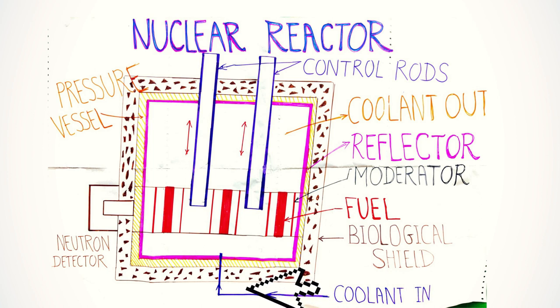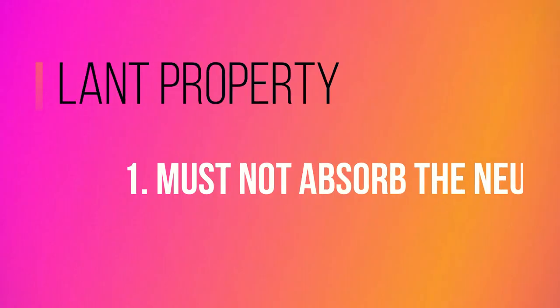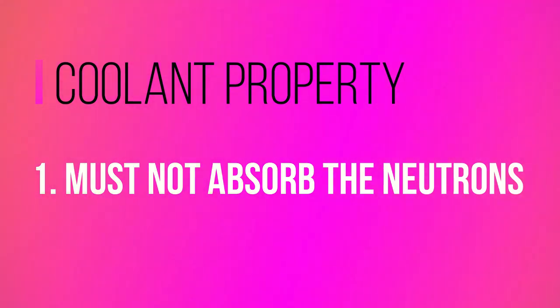The next one is coolant. The main purpose of coolant in the reactor is to transfer the heat produced inside the reactor. Some desirable properties of a good coolant are: it must not absorb neutrons.